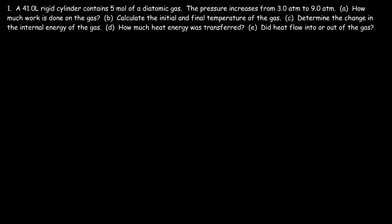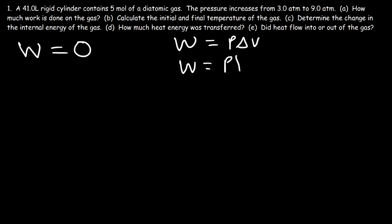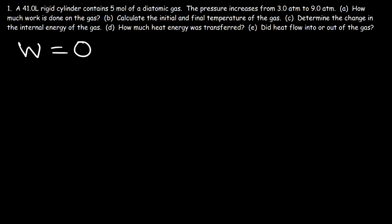For an isochoric process, the work done by the gas is always going to be zero. Using the equation W = P·ΔV, the change in volume is zero because the volume is fixed, so this gas will perform no work. W is always zero for an isochoric process — something you want to keep in mind.